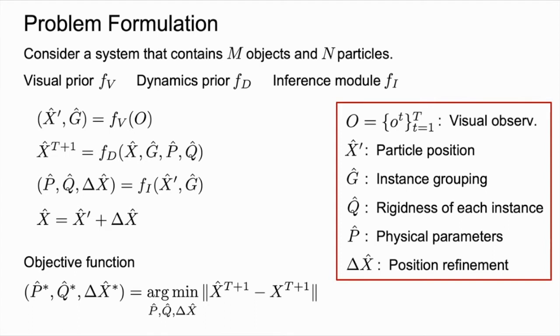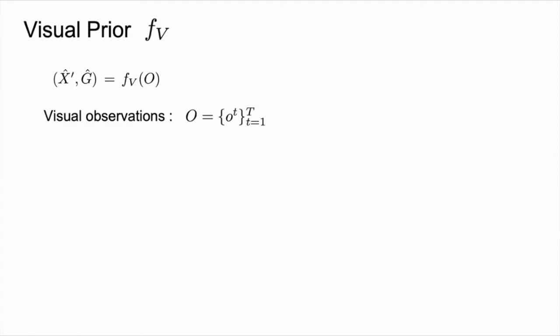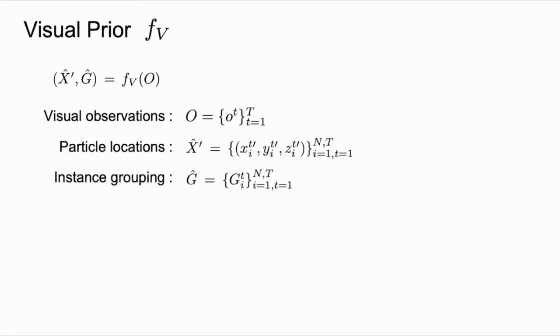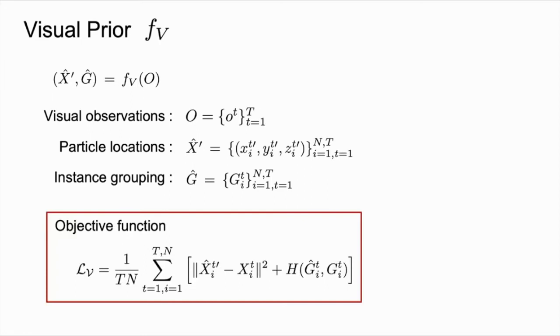Next, I will go through the details of each module. The visual prior F_V takes in a sequence of visual observation images O, and then predicts the position of the particles and the probability distribution over all object instances that the particle might belong to. The visual prior F_V is trained on the ground truth particle states acquired from the physics engine. The full loss function is written as here, where H stands for the cross-entropy loss.